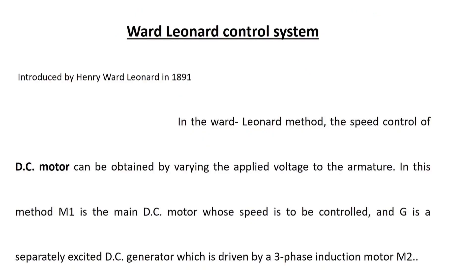Today's topic is the Ward Leonard control system. In this system, the speed of the DC motor is controlled by varying the applied voltage to the armature. In this method, M1 is the main DC motor whose speed is to be controlled, and G is a separately excited DC generator, which is driven by a three-phase induction motor or a DC motor, that is M2.